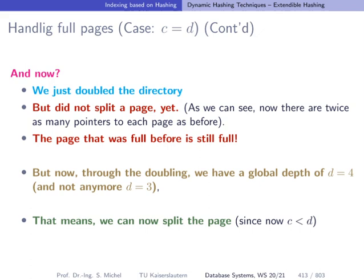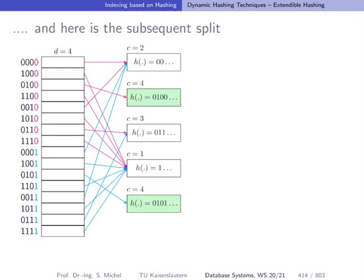So we doubled the directory, did not yet change the local depths and this is just written on the slide what I mentioned already. So let's do that and change the local depths from 3 to 4 which would result in these two green shaded buckets. And now you see that now this 0100 and 0101 have different pointers. So now the conflict or this overflowing or this too-full bucket problem is resolved.